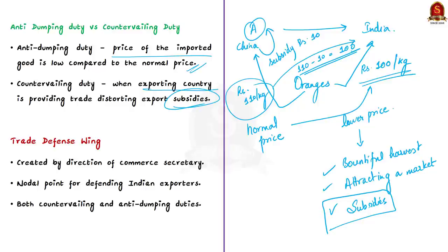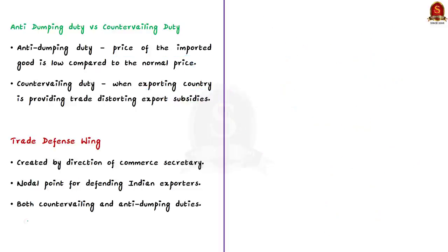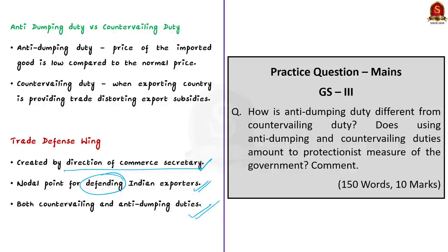Before concluding, we need to see some points about the Trade Defense Wing. India imposes countervailing and anti-dumping duties against foreign exporters, but similarly foreign countries also impose such duties against Indian exporters. As per the direction of the Commerce Secretary, Trade Defense Wings have been created in the Directorate General of Trade Remedies. These wings act as a nodal point for defending Indian exporters from investigations regarding countervailing duty and anti-dumping duty initiated by other WTO member countries.